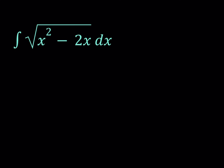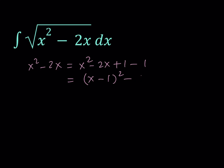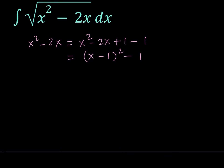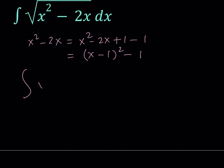To solve this problem I'm going to complete the square. Starting with x squared minus 2x, I'd like to write it as x squared minus 2x plus 1 minus 1, which makes it a perfect square. So this becomes the quantity (x minus 1) squared minus 1. Replacing under the radical gives us the square root of (x minus 1) squared minus 1, dx.